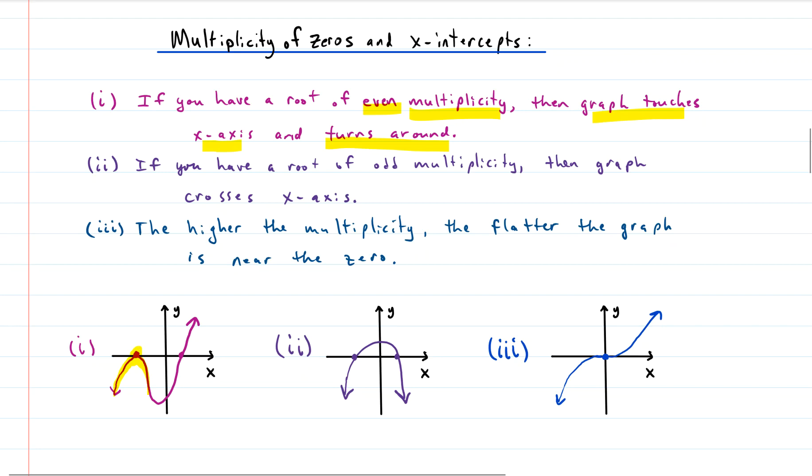If you have an odd multiplicity, then it crosses the x-axis. So for example, here, here, here, and here. So you can see odd multiplicity, meaning one root or three roots. They're the same. So a root repeats itself three times, or five times, or just once. Those are all odd multiplicities.